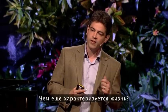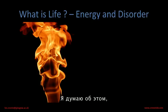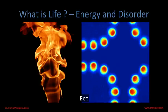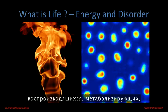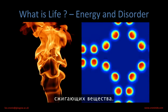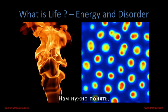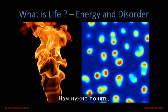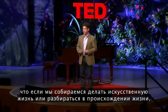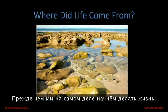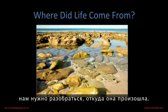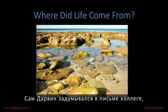What else is life characterized by? I like to think of it as a flame in a bottle. What we have here is a description of single cells replicating, metabolizing, burning through chemistry. And so we have to understand that if we're going to make artificial life or understand the origin of life, we need to power it somehow. Before we can really start to make life, we have to really think about where it came from.